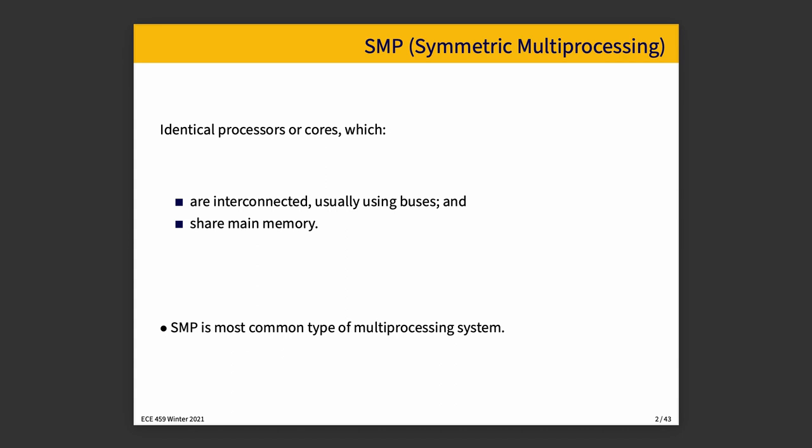The kind of system we're talking about is, generally speaking, a symmetric multiprocessing system, SMP. That means there are identical processors or cores, which are interconnected, usually using some sort of bus or other similar construct, and they share main memory. SMP is the most common type of multiprocessing system. Desktop PCs started to be SMP maybe 20 years ago, rarely, and much more commonly 15 years ago. SMP is the norm now.